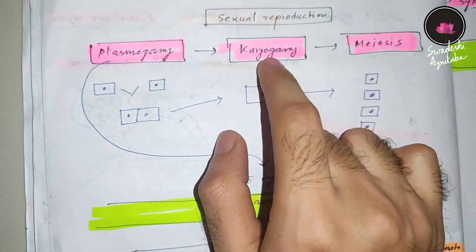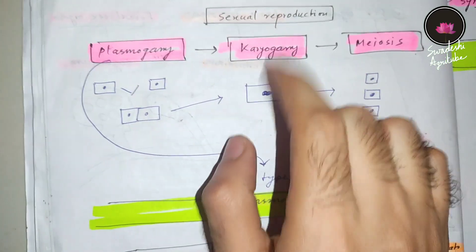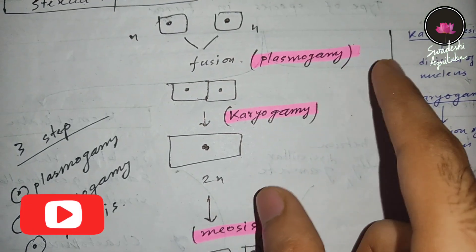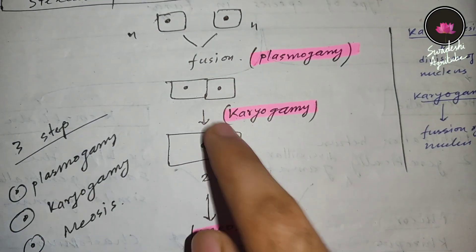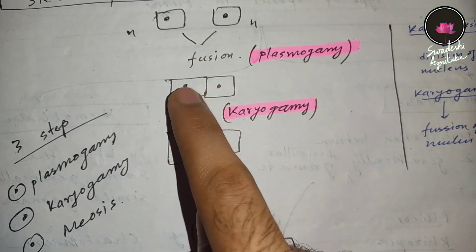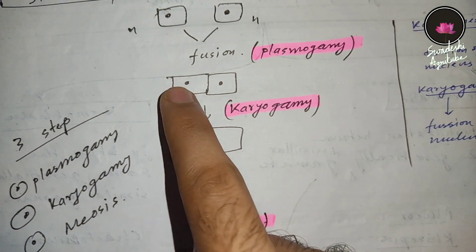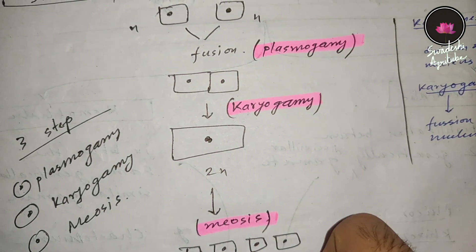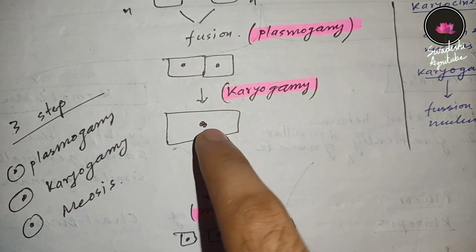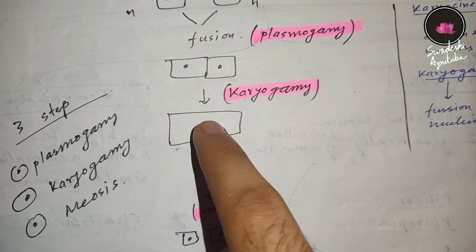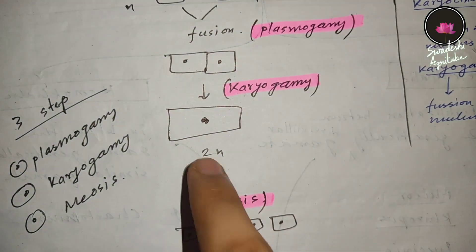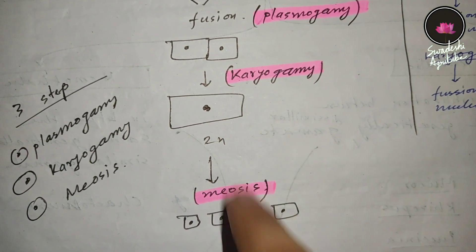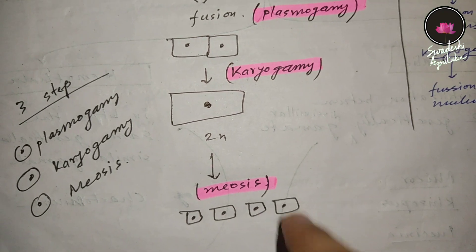After plasmogamy, the next phase is karyogamy. After the fusion of protoplasts in plasmogamy, karyogamy occurs — you can see two nuclei coming into one, producing 2n. This is also called a zygote. After karyogamy produces the 2n zygote, meiosis happens and four gametes are produced.